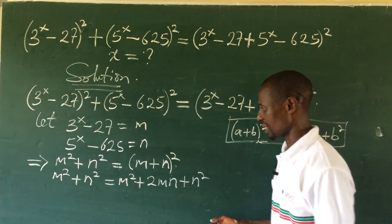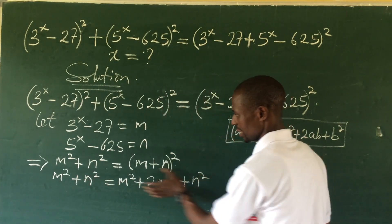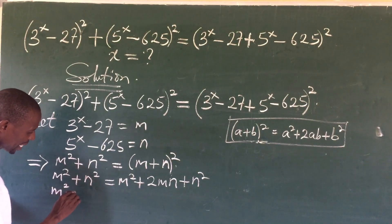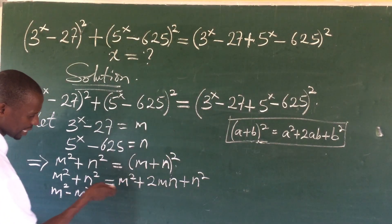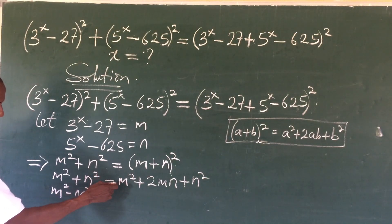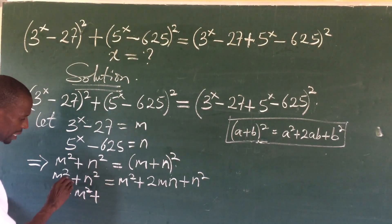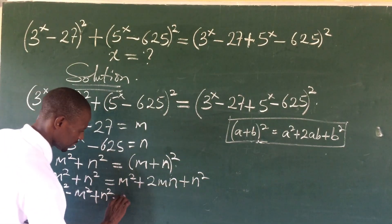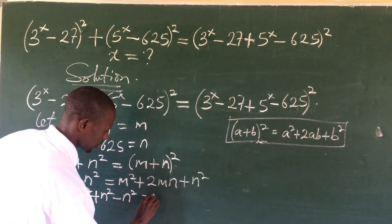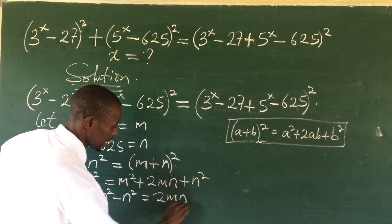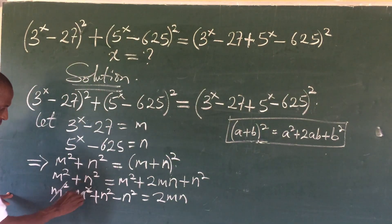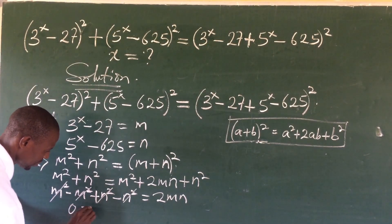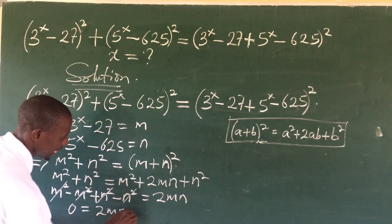All we need to do now is collect like terms. Bringing m² to the left gives m² − m² = 0, and n² − n² = 0, leaving us with 0 = 2mn. Therefore we have 0 = 2mn.